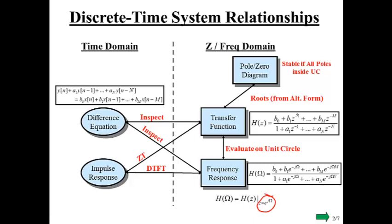For example, this Z inverse becomes E to the minus J omega. So we've seen that. We've also seen that from the transfer function we can find the pole-zero diagram. And from the pole-zero diagram we can assess the stability of the system. We've also seen that from the transfer function or the frequency response we can get this thing called the impulse response.